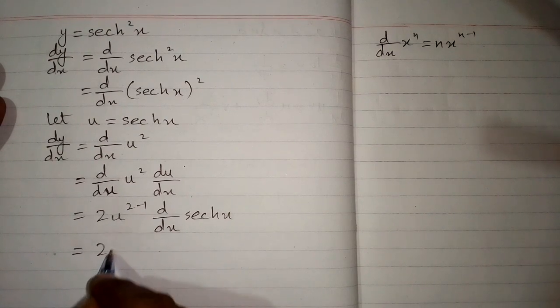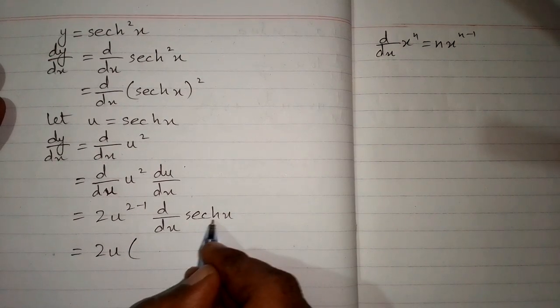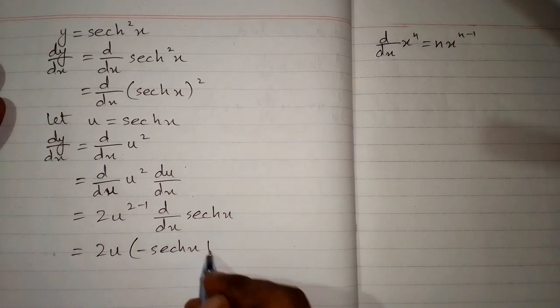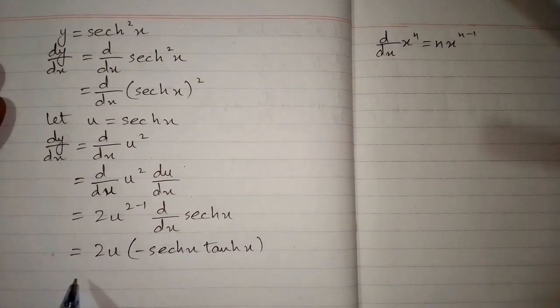Now we have 2u, and the derivative of hyperbolic sech x is minus hyperbolic sech x multiplied by hyperbolic tanh x.